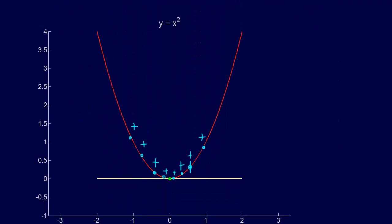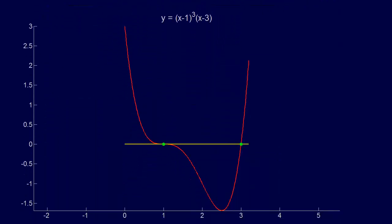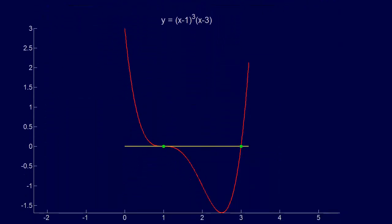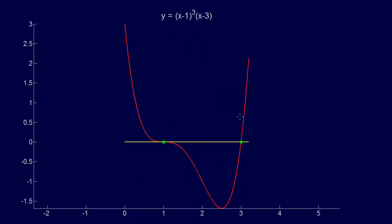And another example that we can see of an equation with multiple roots is this one, and again, pointing out the problems here, we see that the derivative goes to zero, so especially the open methods are really going to suffer here.